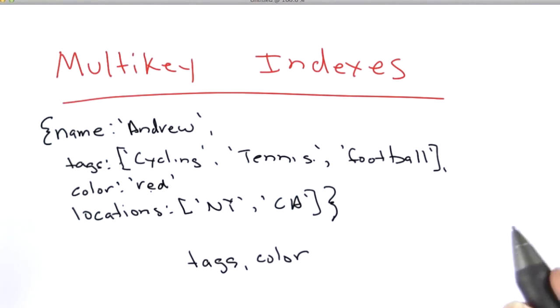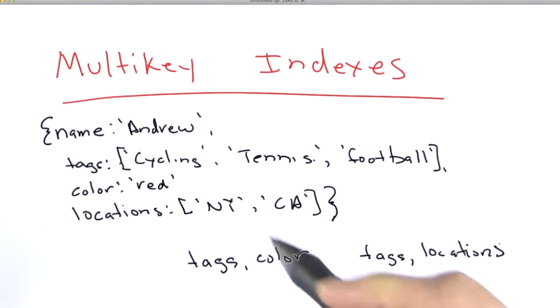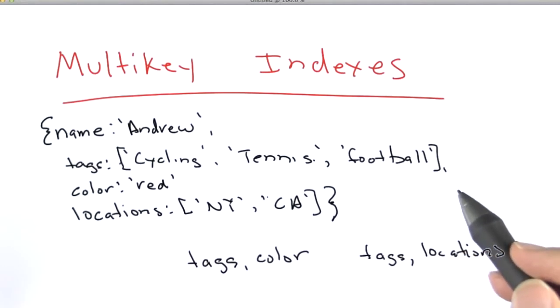But MongoDB wouldn't allow you to create a compound index on tags comma locations. Because then it has to create index points for every combination of the array elements. And that gets too large, and so it's not allowed.